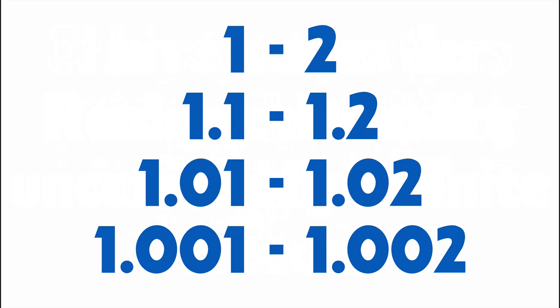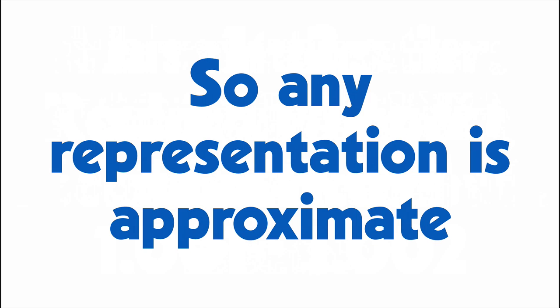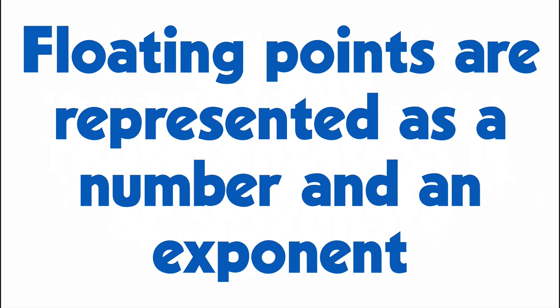Because the real numbers are uncountable, it means the exact one-to-one encoding that we use for integers just can't work for real numbers. Any representation of real numbers in computer memory is going to be approximate. Floating point numbers is the encoding approximation that computers use to represent real numbers.